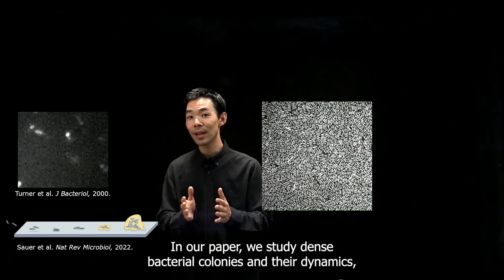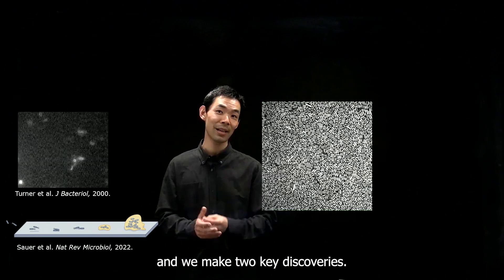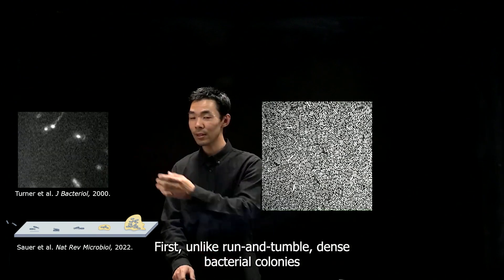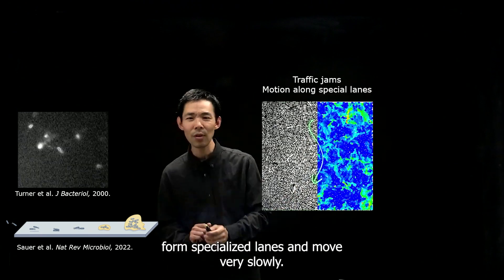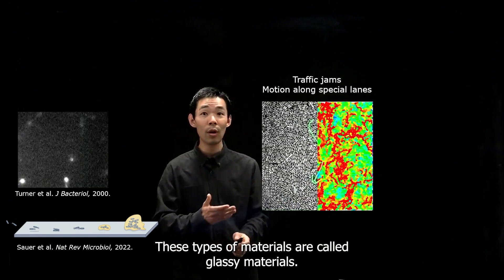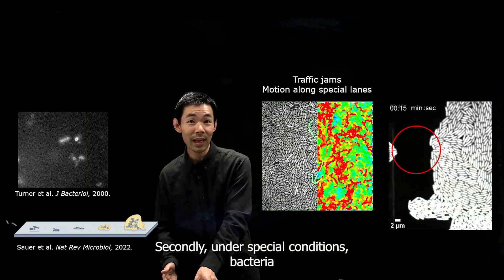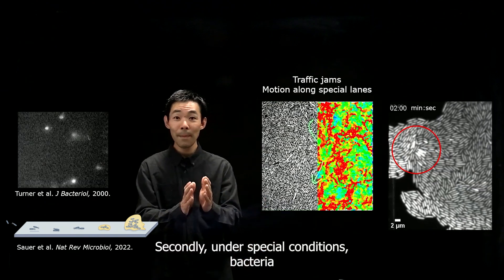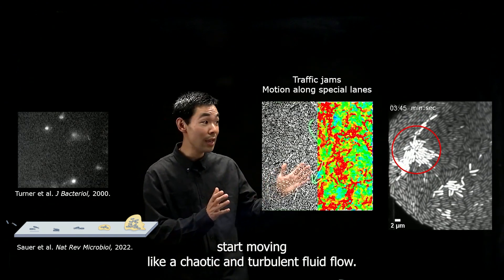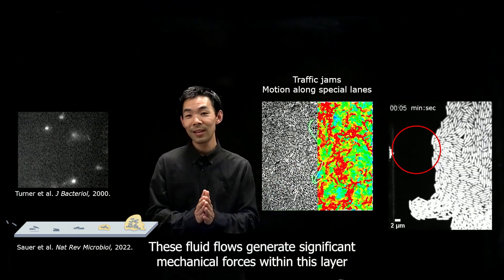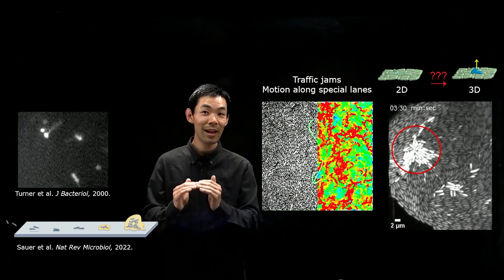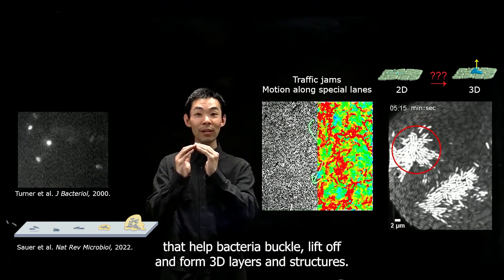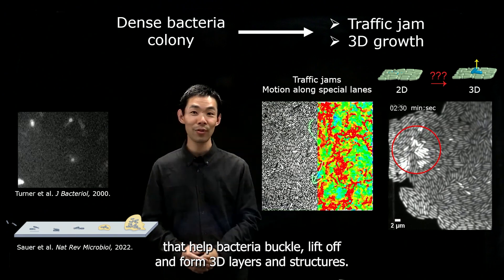In our paper, we study dense bacterial colonies and their dynamics, and we make two key discoveries. First, unlike run-and-tumble, dense bacterial colonies form specialized lanes and move very slowly. These types of materials are called glassy materials. Secondly, under special conditions, bacteria start moving like a chaotic and turbulent fluid flow. These fluid flows generate significant mechanical forces within this layer that help bacteria buckle, lift off, and form three-dimensional layers and structures.